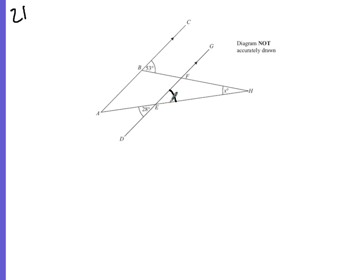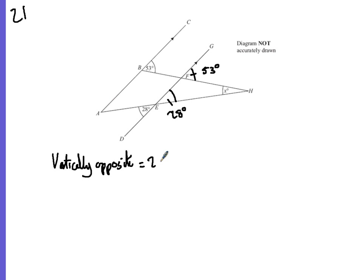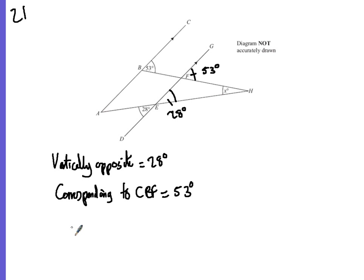Vertically opposite here gives us 28 degrees. If this angle is 53, then the vertically opposite angle in here is 53 as well. This is called the corresponding angle — corresponding to CBF — so that equals 53. Then to get angle EFH we do 180 minus 53, which gives us 127 degrees.